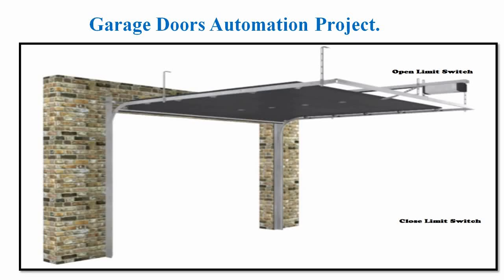In contact programming, we will take an example of a garage door automation project. A garage door consists of two limit switches: one is a close limit switch and one is an open limit switch. When the door is fully open, the open limit switch gives you an output, and when the door is fully closed, the close limit switch gives you an output.